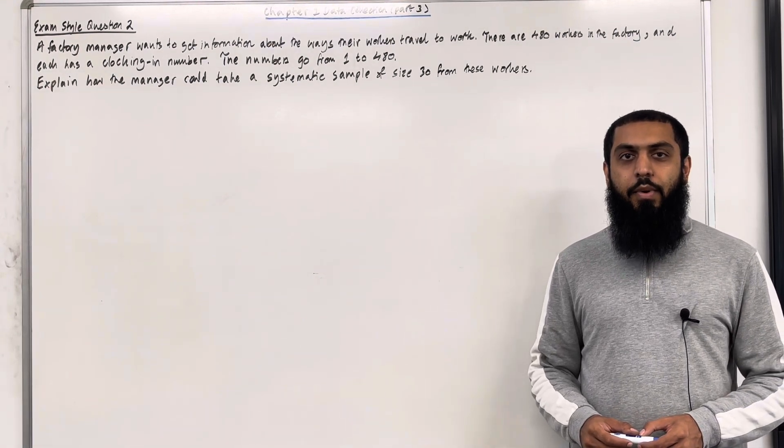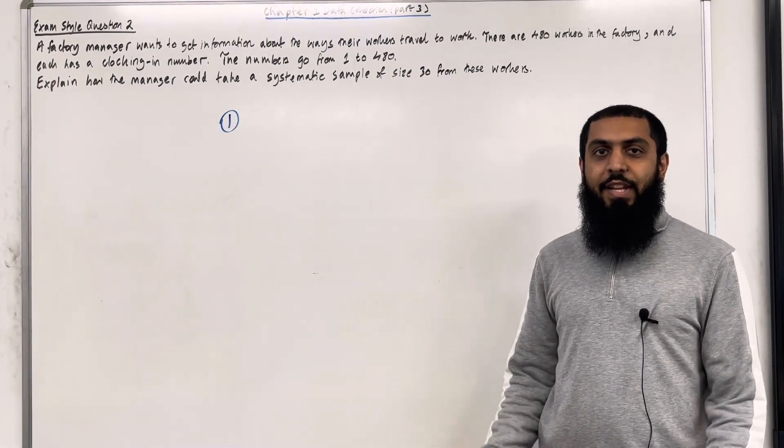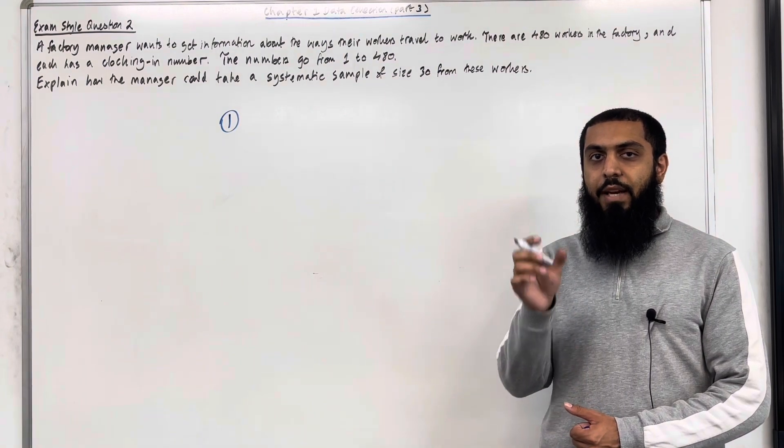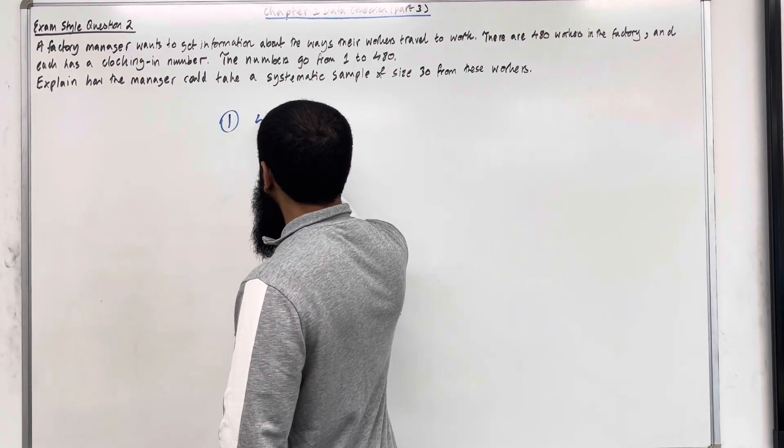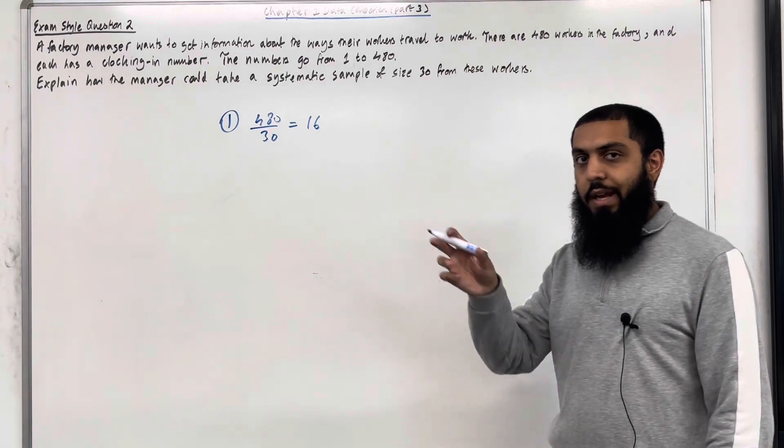Starting off with step number 1. In step number 1 we want to work out the regular intervals. We take 480 and we divide by 30. So we have 480 divided by 30 is equal to 16. So we have regular intervals of 16.